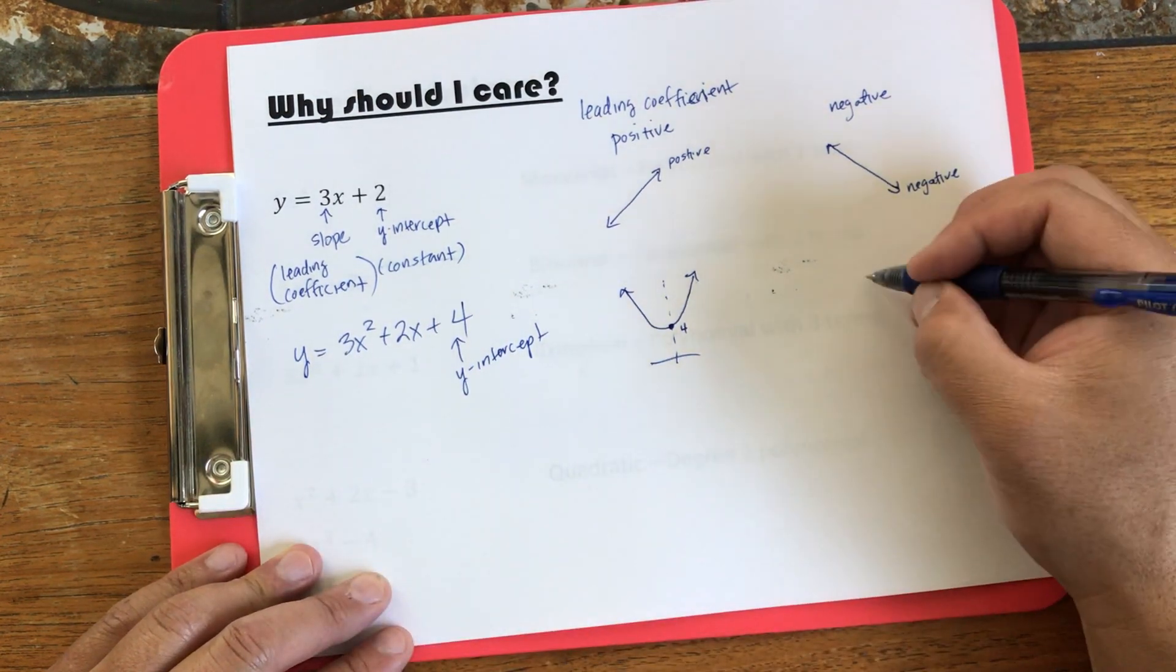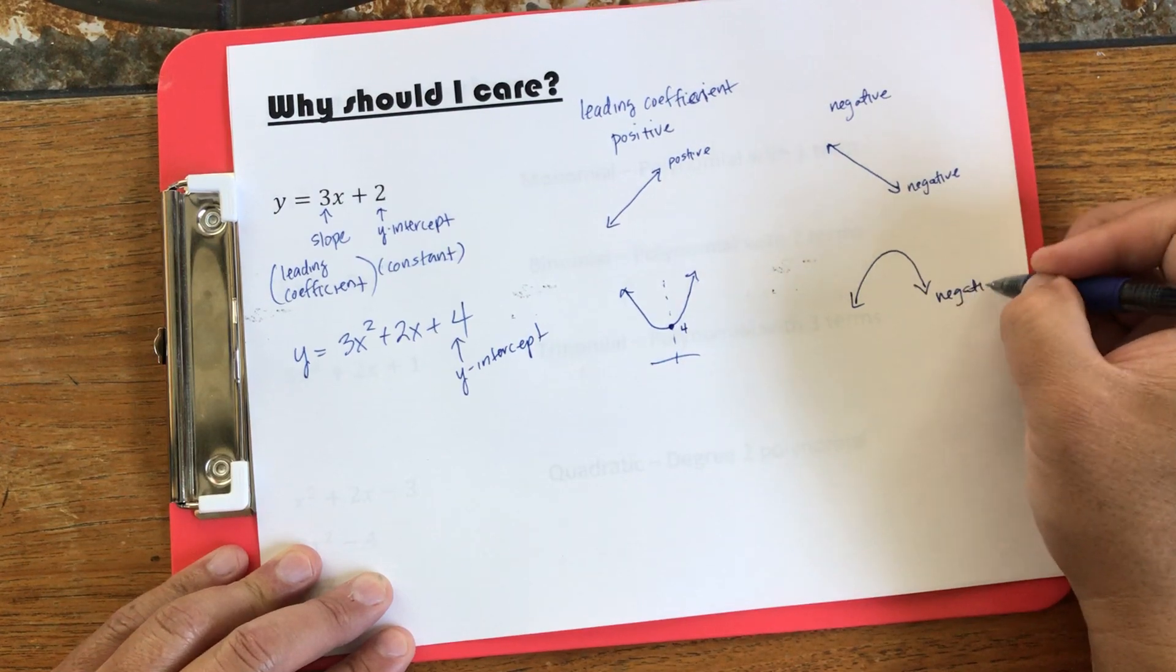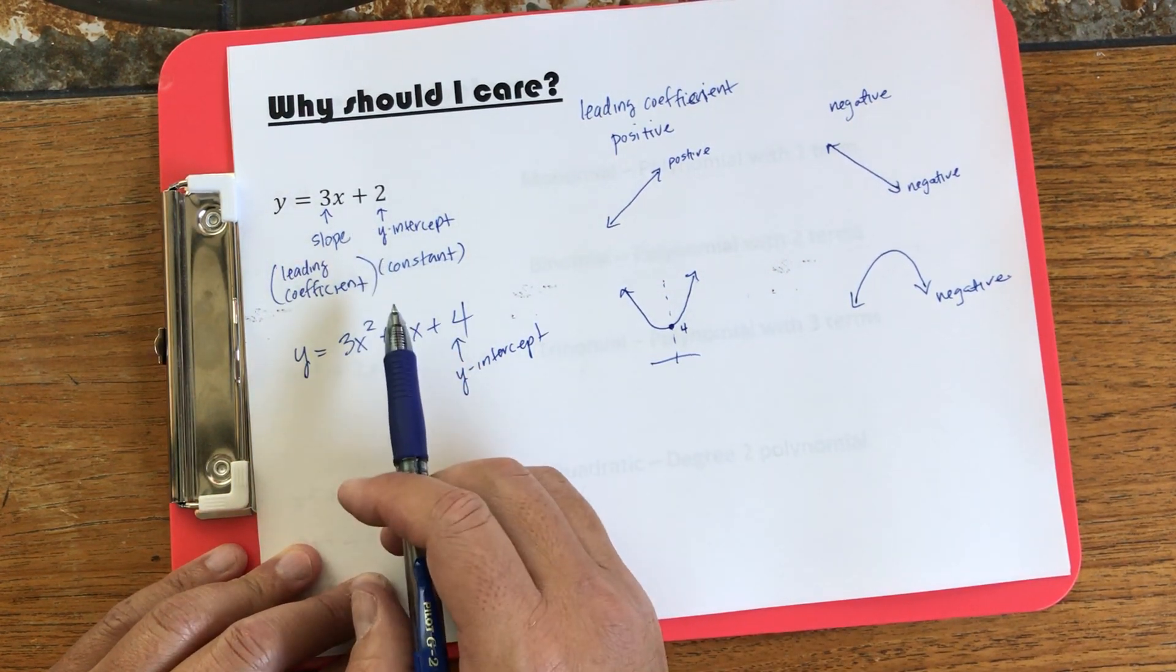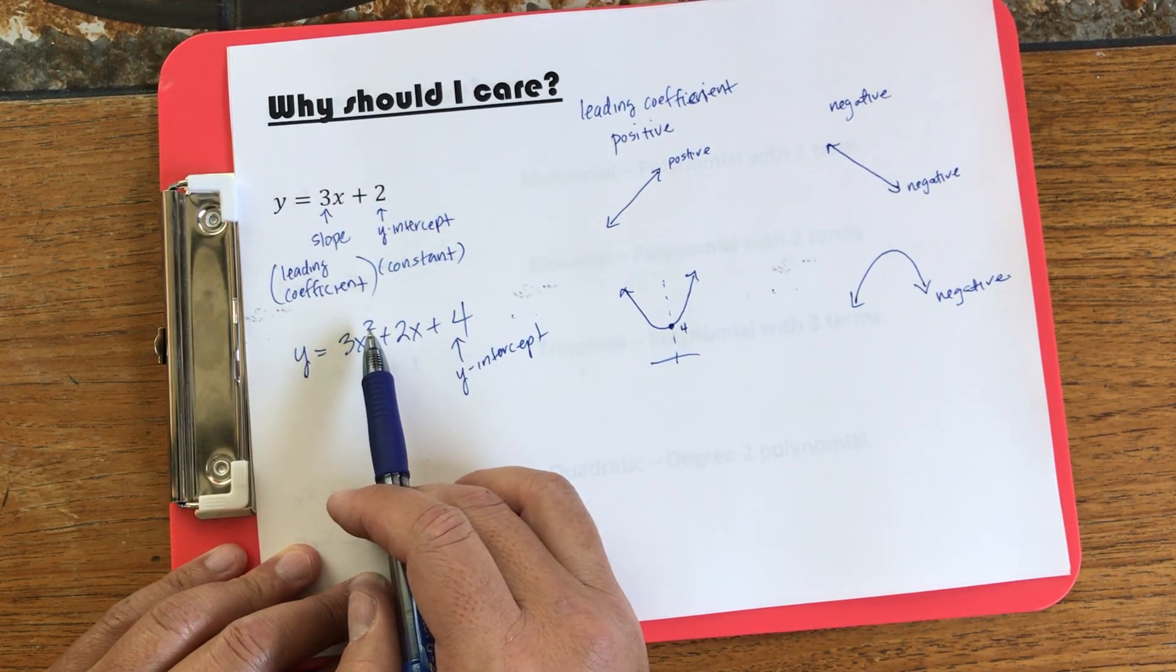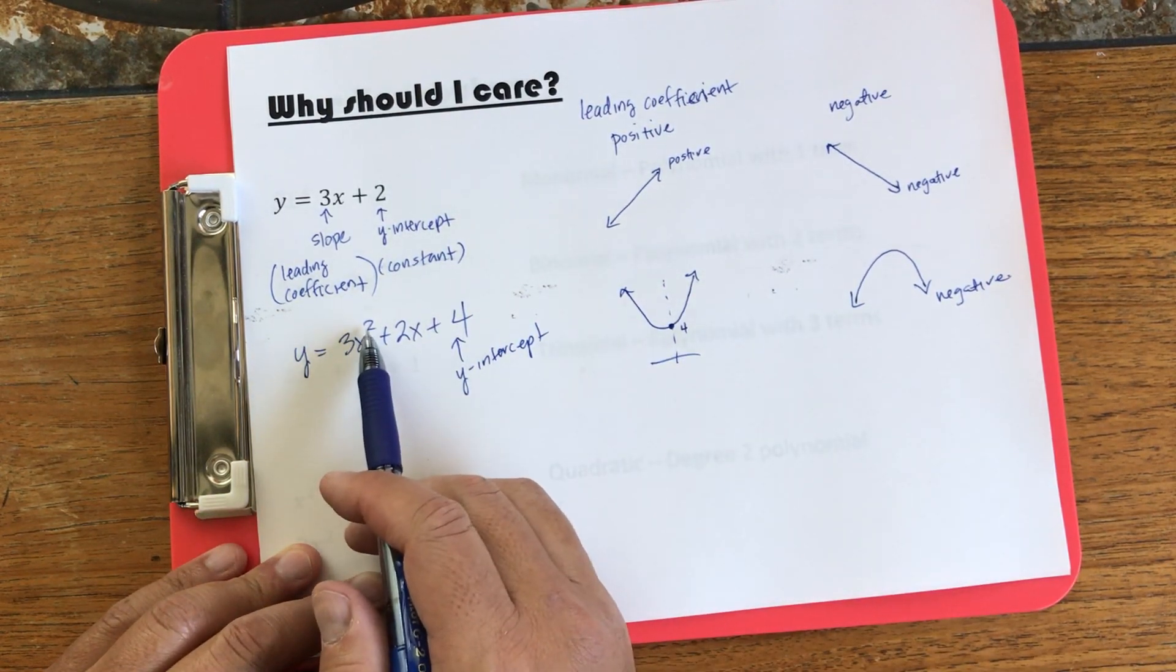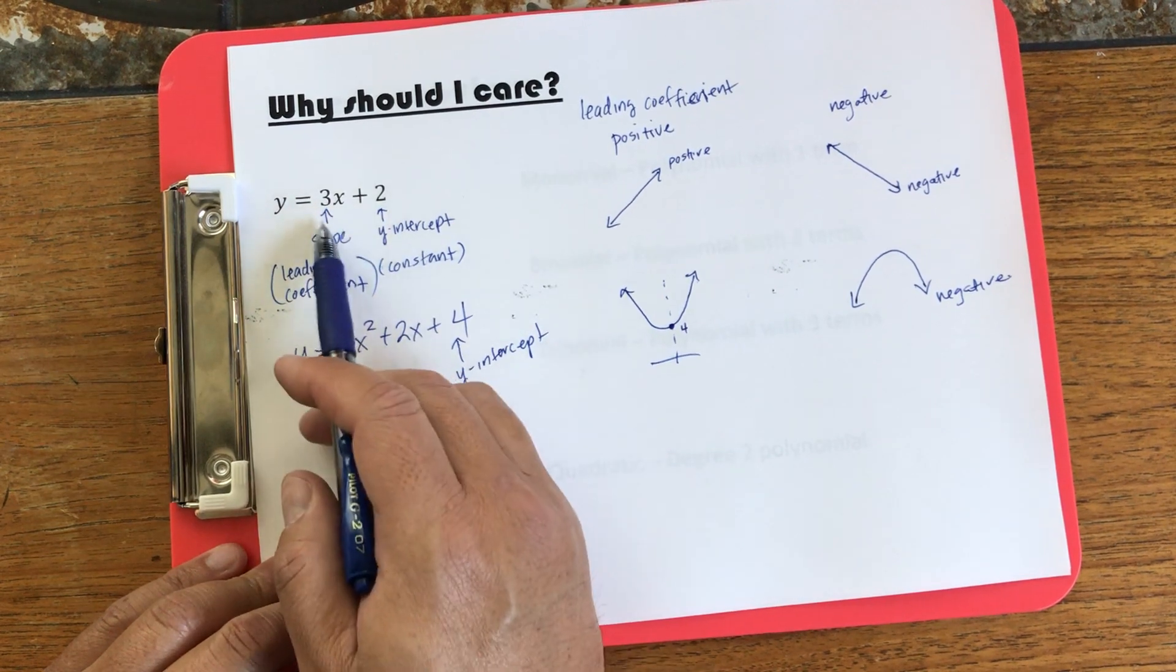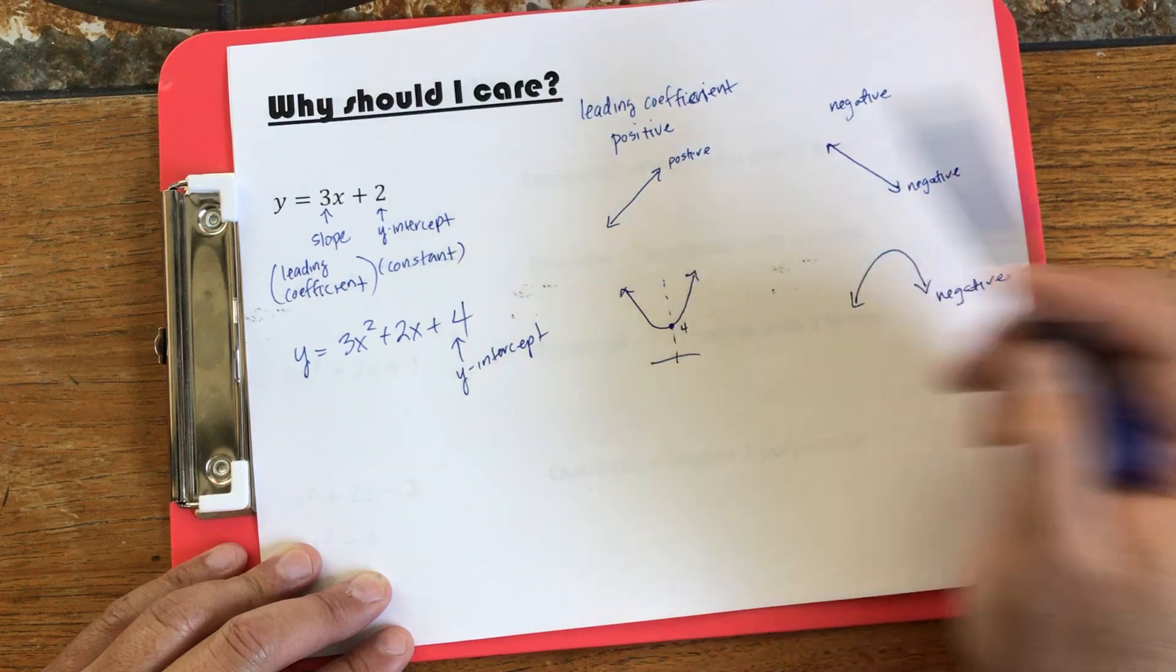Now, if the leading coefficient was negative, we know that this graph would look like this. Now, when we look at the degree, over here, we have degree 2. So there is always a degree minus 1 number of turns. Meaning that if my degree is 2, 2 minus 1 is 1. So there can be one turn. Over here, my degree is 1. 1 minus 1 is 0. And that's why I have a straight line. There are no turns.